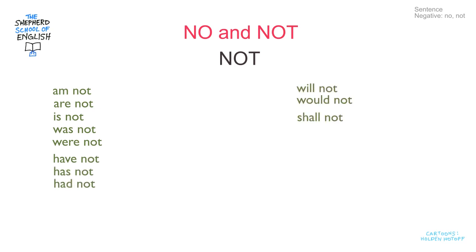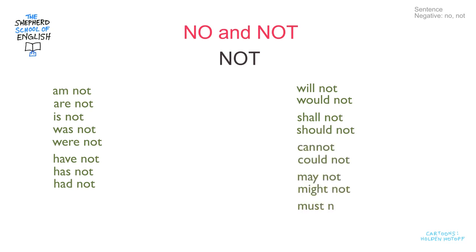Will not, would not, shall not, should not, cannot — but we write it as one word: cannot — could not, may not, might not, must not. And of course the short forms which we often use, and here they are.